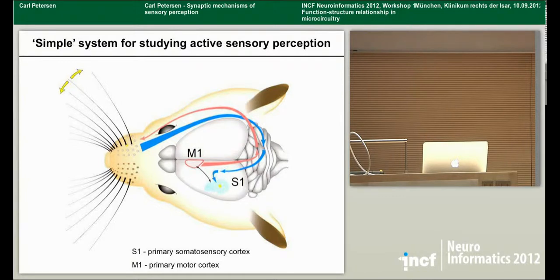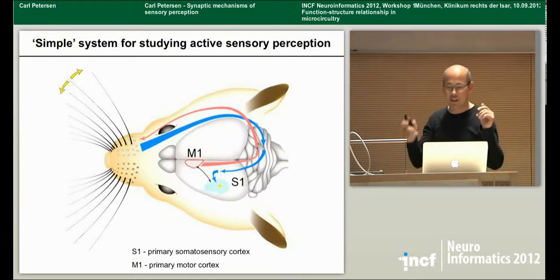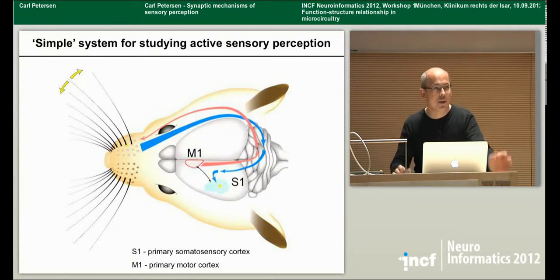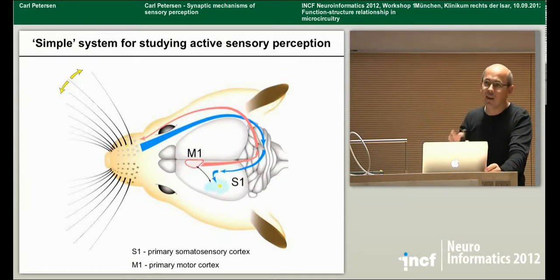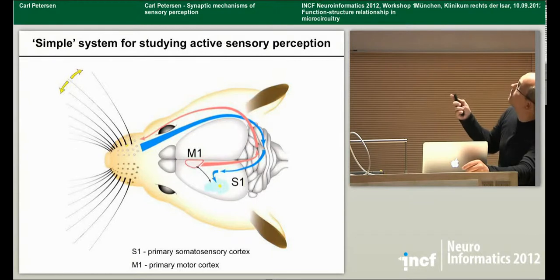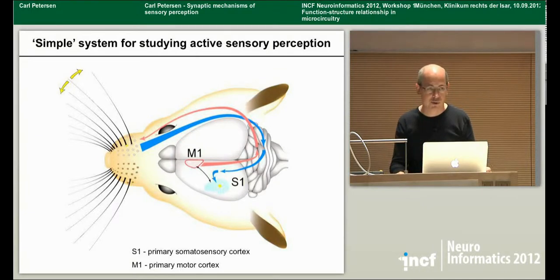Whisker information is further processed in the primary somatosensory cortex. In addition to a feedforward sensory pathway, there's also a very active motor component. There's an area of primary motor cortex — vibrissal motor cortex — that projects down to brainstem central pattern generators and drives movement of these whiskers. This is the typical way the animal gathers sensory information: it actively moves its whiskers, touches objects. So if we want to understand sensory perception, we've got to think carefully about both motor and sensory components.